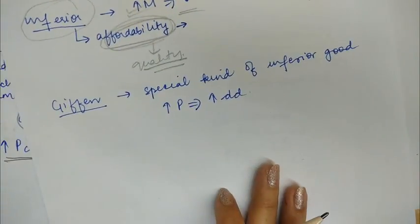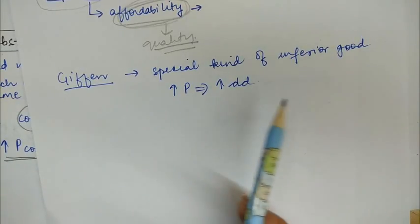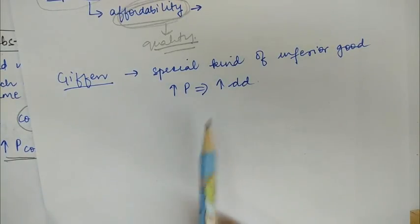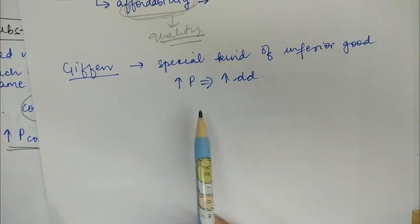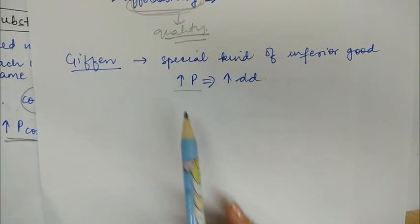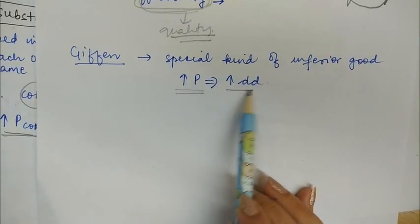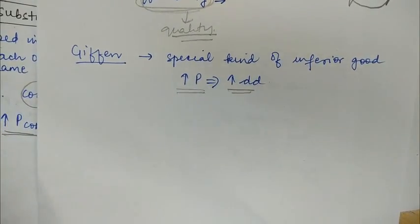Giffen goods are a special kind of inferior good where, with an increase in the price of the good, the demand for that good actually increases.